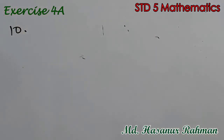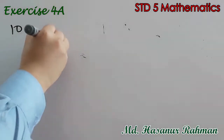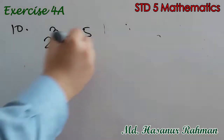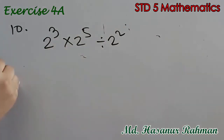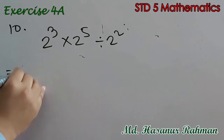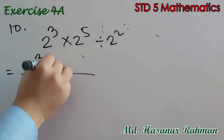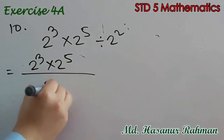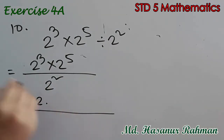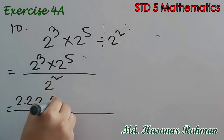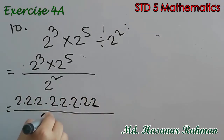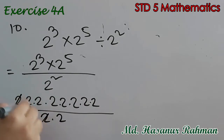Now number 10 says 2 cubed into 2 to the power 5 divided by 2 squared. What is 2 cubed? 2 cubed means 2 into 2 into 2. What is 2 to the power 5? That is 2 into 2 into 2 into 2 into 2. What is 2 squared? 2 into 2. Now you can divide and cancel.